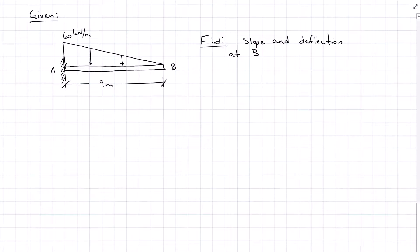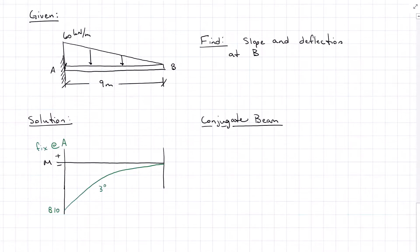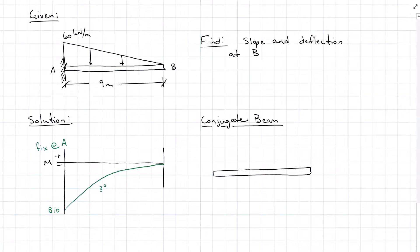This time we're given a cantilevered beam with a triangular load, and we want to find the slope and deflection at B. The system is fixed at A, so let's draw the moment diagram. For our conjugate beam, we're going to have the same 9-meter length and load it with our third-degree distributed load.